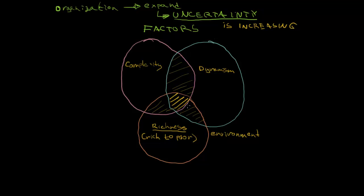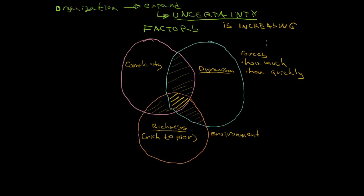Moving to the second factor — dynamism — this is basically telling us more about the forces: how much and how quickly these forces interact. The environment is stable if forces affect resources in a predictable way. The uncertainty is increasing when the dynamism of the environment is getting from stable to unstable.